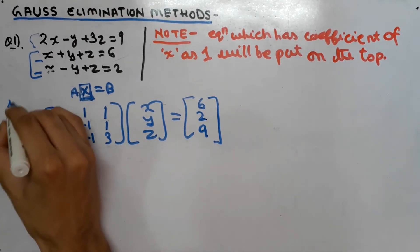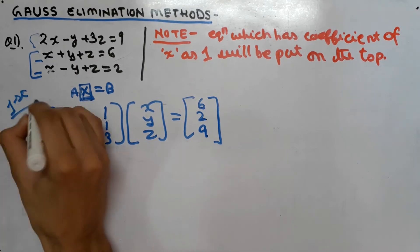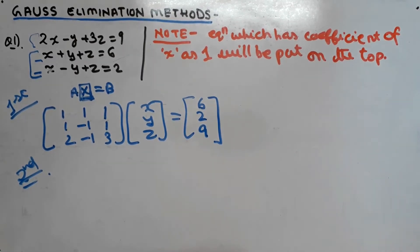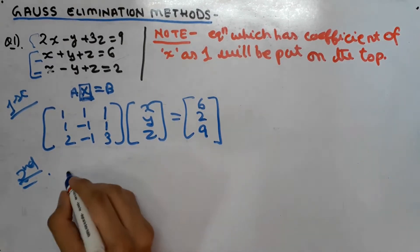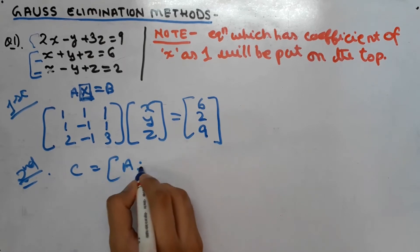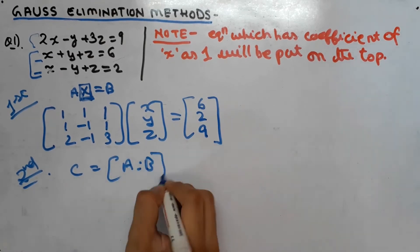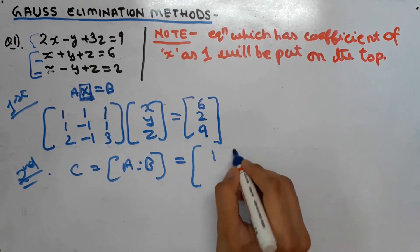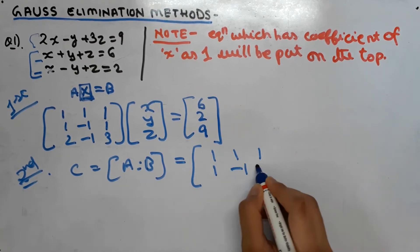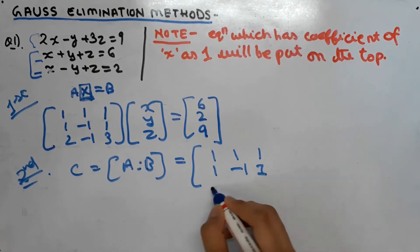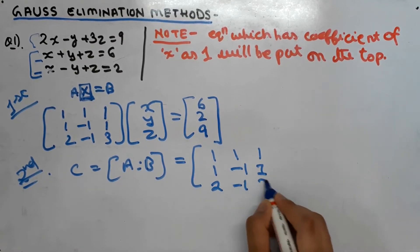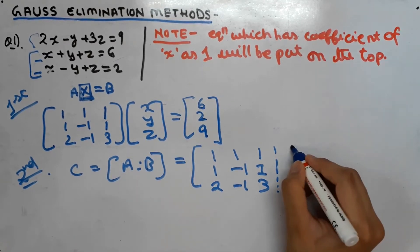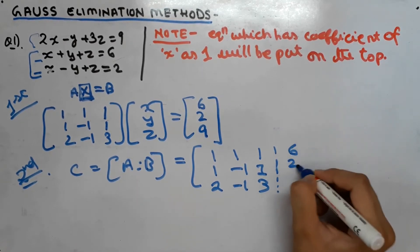That was step 1. Our second step is to write the augmented matrix C = [A : B], which looks like: 1, 1, 1; 1, -1, 1; 2, -1, 3, with matrix B giving 6, 2, 9. Now comes the most important part — converting it into echelon form.